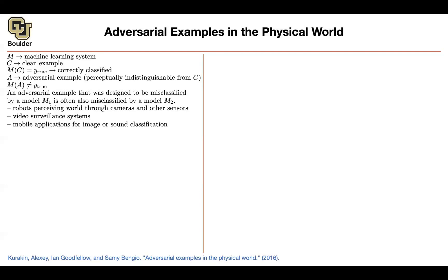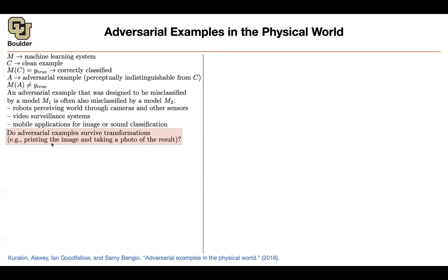Our robots are going to perceive the world through cameras and other sensors. Self-driving cars will perceive the world through cameras or lidar scanners. Smart cities and video surveillance systems, as mentioned in our GitHub repository, will perceive the world through cameras. The same is true for mobile applications — for instance, a translator where you point your camera at writing on a building in Chinese and it gets translated to English. Do adversarial examples survive the transformations seen in the physical world?